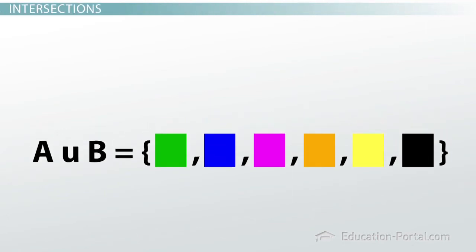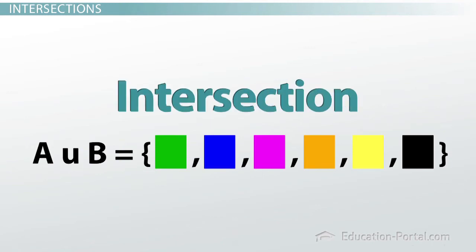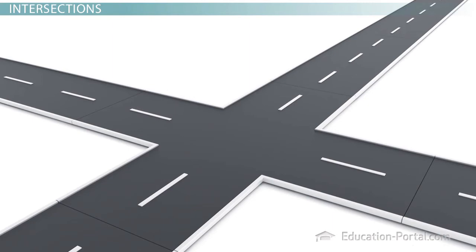To find elements in common with sets, we use the term intersection. Think of the sets as two roads that meet at an intersection. What do the two roads or sets have in common?